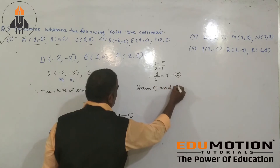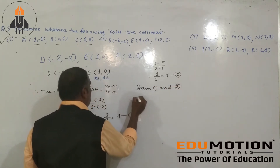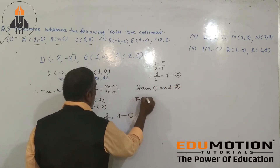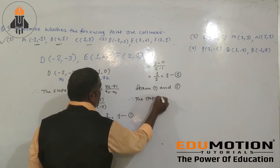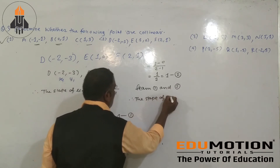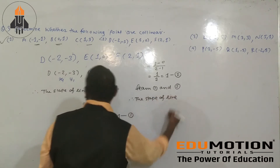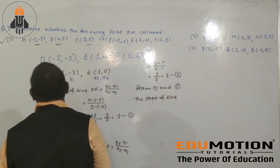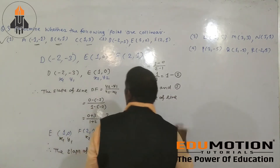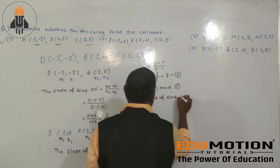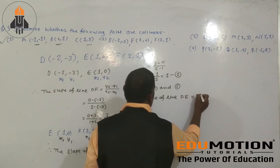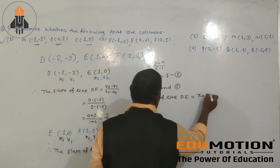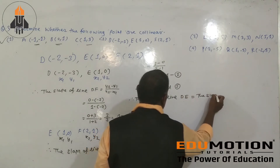From equations 1 and 2, we can write: the slope of line DE equals the slope of line EF. Therefore points D, E, F are collinear.